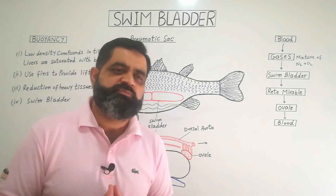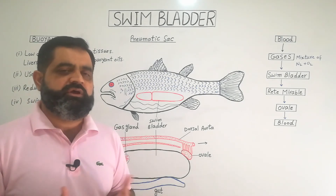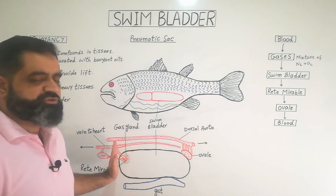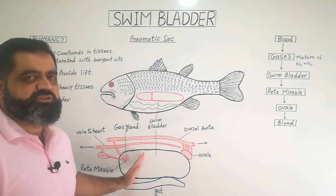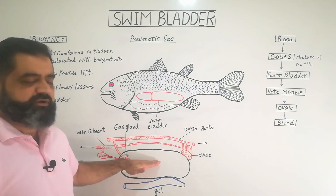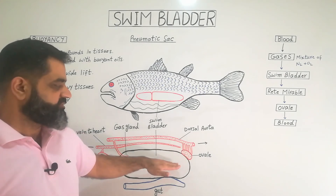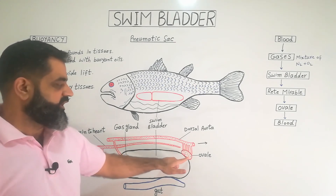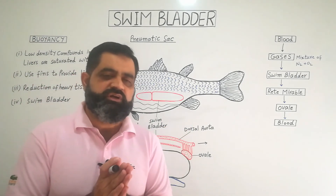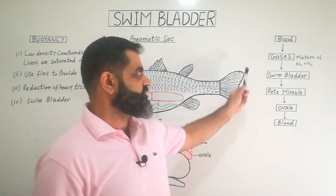The mechanism used by the fish for the transport of gases is known as counter-current exchange. Counter-current exchange works as follows: when there is more concentration of gases in the blood and less concentration in the swim bladder, gases diffuse from blood into the swim bladder via the gas gland. In the same way, at the ovale, when the concentration of gases in the blood is less than that in the swim bladder, gases move from the swim bladder back into the blood.